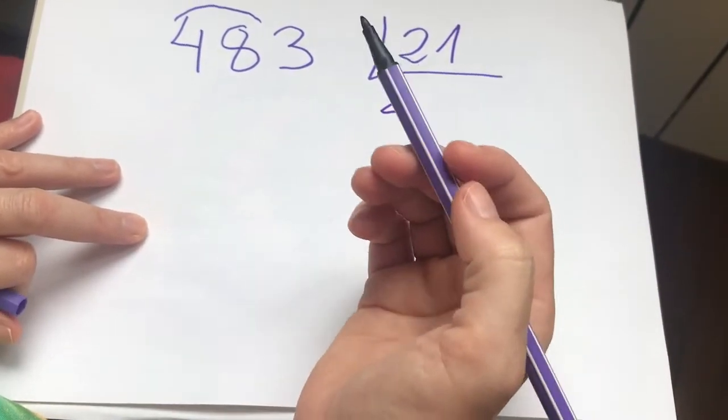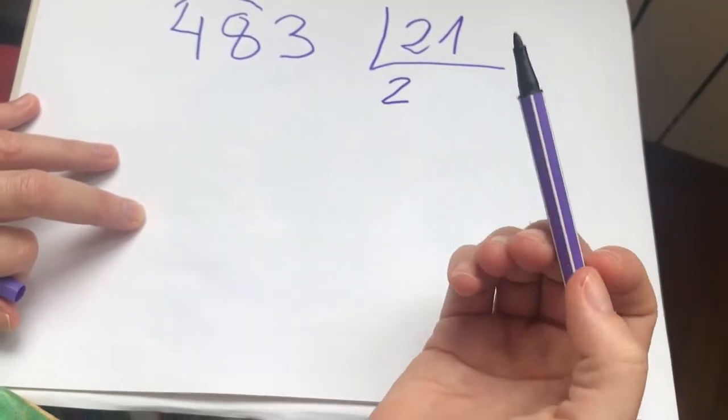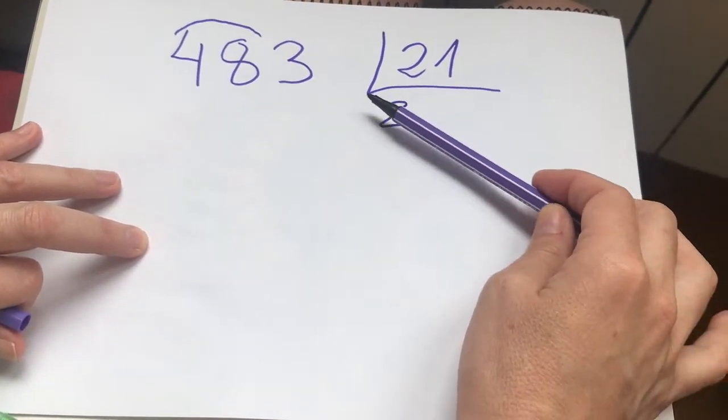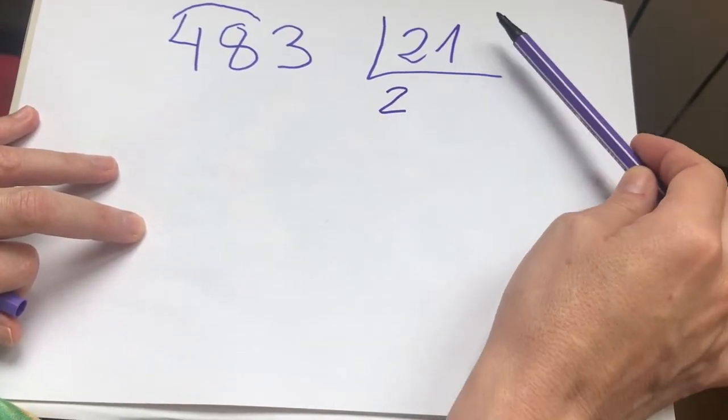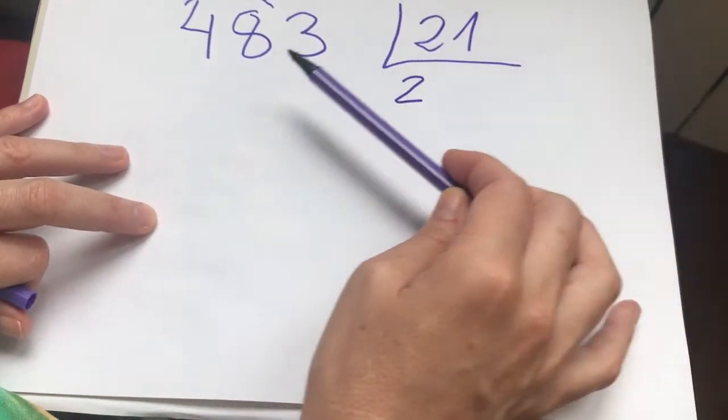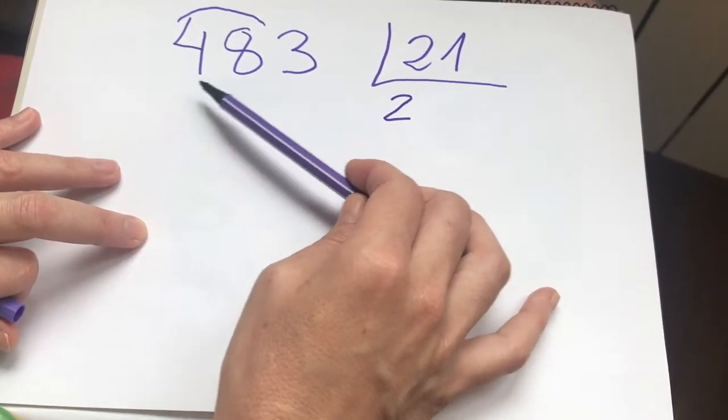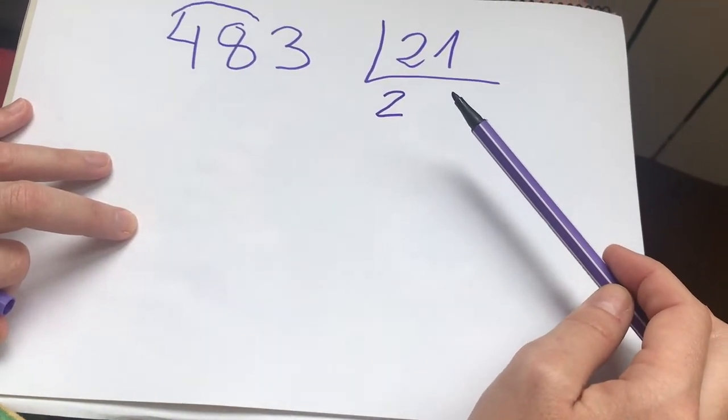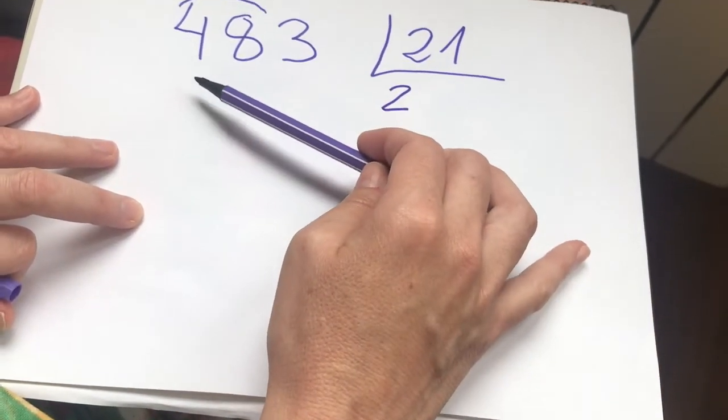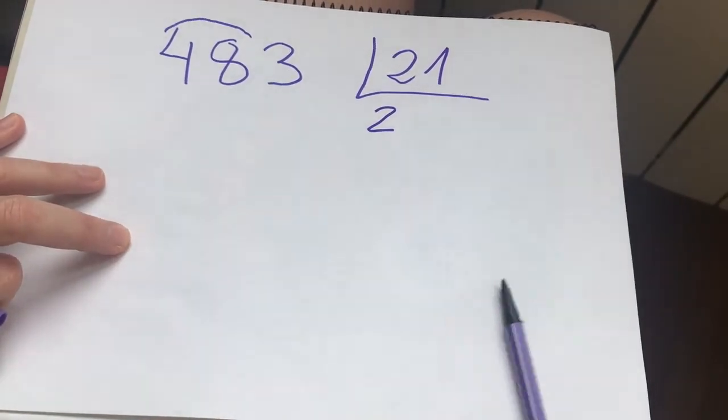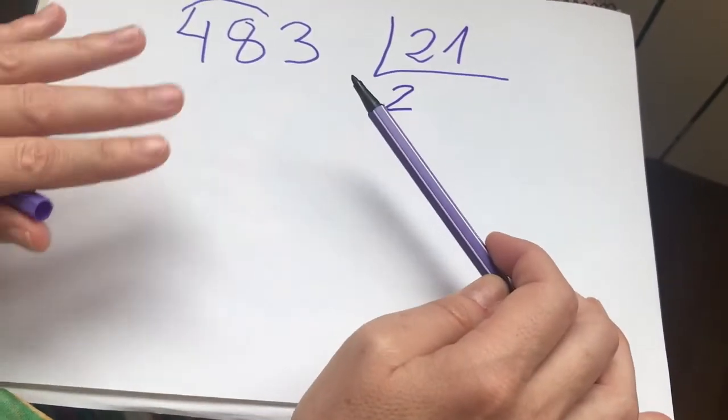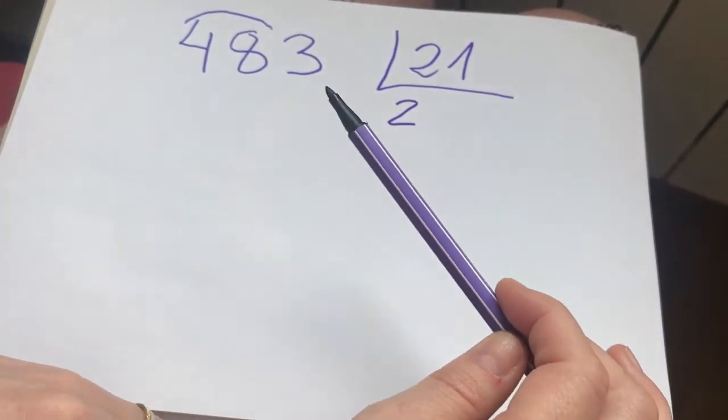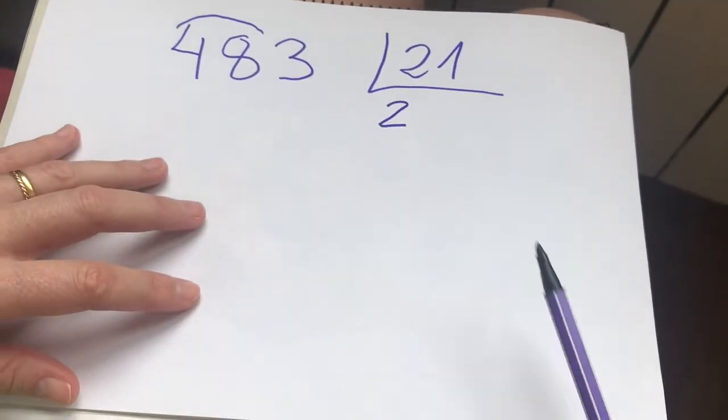Ahora podemos hacer 3 cosas. Una, poner la resta directamente. Ahora ya he calculado el 2. Entonces lo que tengo que hacer es multiplicar este 2 por todo el 21 y restárselo a 48. Puedo hacer la resta aquí directamente. O puedo hacer la resta fuera y luego ponerla aquí. O directamente lo puedo hacer con los dedos. Lo voy a hacer de las 3 formas. Primero lo voy a hacer con la resta aquí fuera.